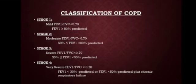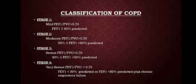The classification of COPD has four stages: stage one is mild, stage two is moderate, stage three is severe, and stage four is very severe. They have different predicted values in terms of FEV1.